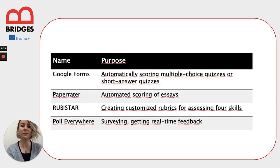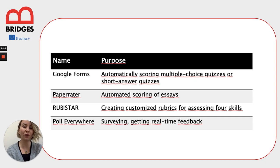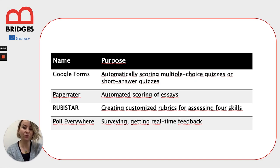There are also some other technological tools that you can use for online scoring. Google Forms can be used for scoring multiple choice quizzes or short answer quizzes. Paper Raider can be used for automated scoring of writing essays. Ruby Star can be used for creating effective rubrics for evaluating students' performances.